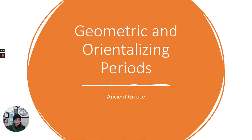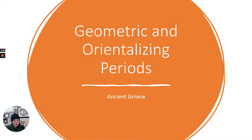Like the last sections, I'm going to break up ancient Greece into a bunch of different subject areas as we talk about it. First off, we're going to talk about the geometric and orientalizing periods. I'll talk about the word 'orientalizing' because I know it maybe kind of burns your ears a little bit — it sort of does to me — but I'll explain this context a little more in a second.